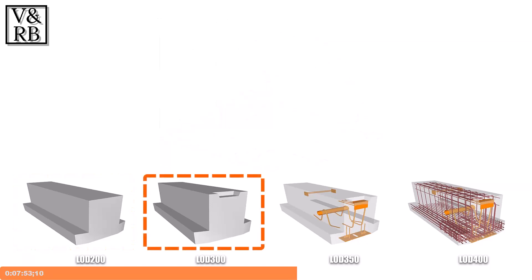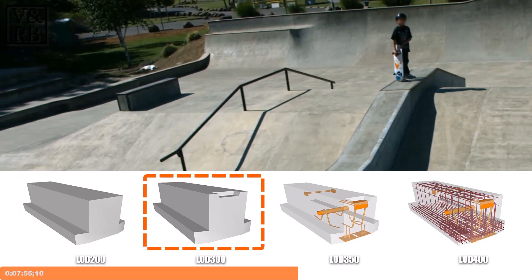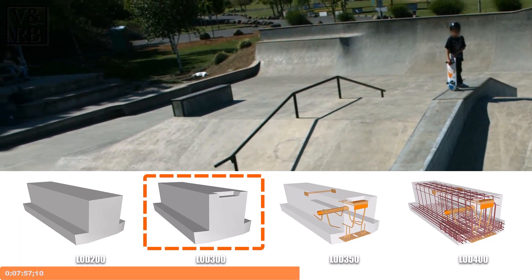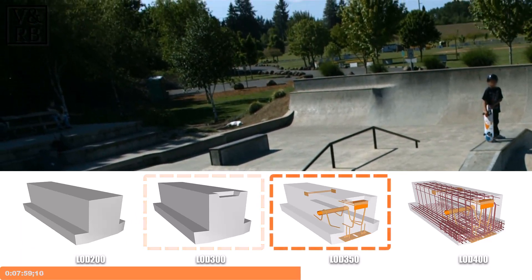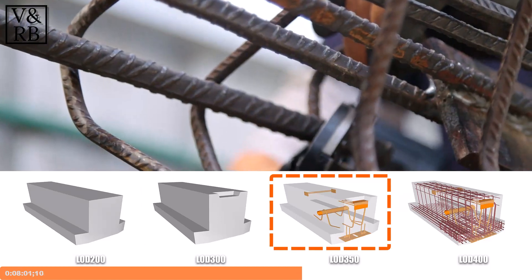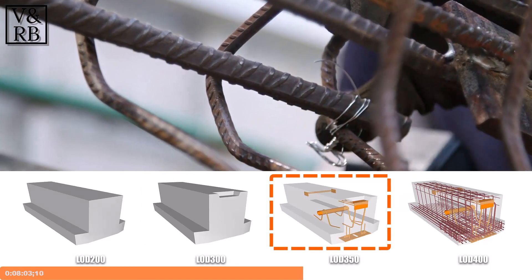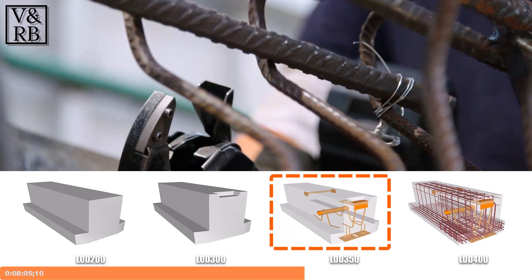LOD 300 requires the accurate size and specification of elements, including all sloping surfaces to be accurately modeled. LOD 350 includes the detail coordination of pour joints, expansion joints, embeds, and anchor rods.